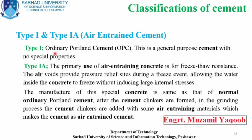The first type is ordinary Portland cement, which is commonly used and has no special properties. The next one is air-entrained cement, which is used to prepare air-entrained concrete and provides freeze-thaw resistance. This is an important point — if you face a freeze-thaw issue, the favorable cement to use is air-entrained cement.